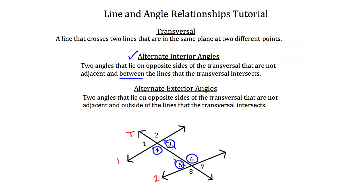Now let's talk about alternate exterior angles — two angles that lie on opposite sides of the transversal, are not adjacent, and are outside the lines that the transversal intersects. Angle one and angle seven are not adjacent, are on opposite sides of the transversal, and are outside lines one and two. Another pair of alternate exterior angles would be angles two and eight.